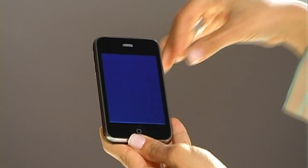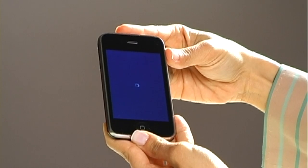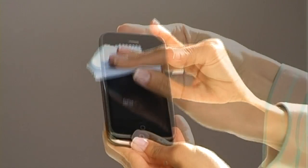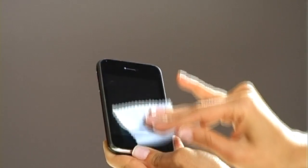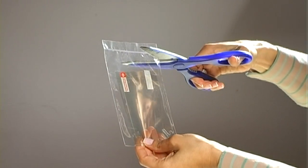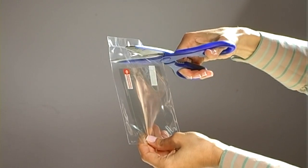Wash your hands with soap and water. Make sure the iPhone is turned off. Wipe down the iPhone with a lint-free cloth. Cut the plastic bag open, making sure not to cut through the product.